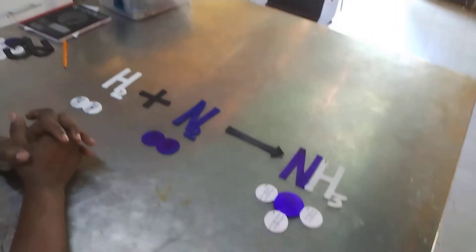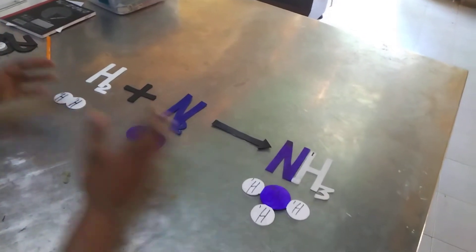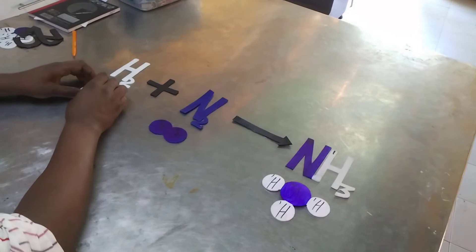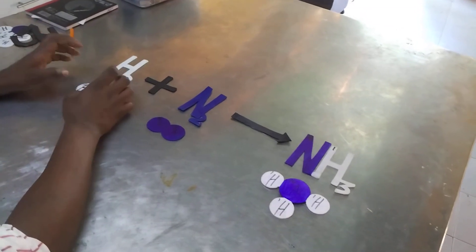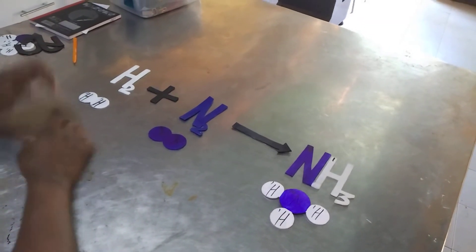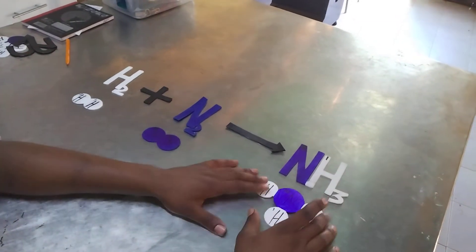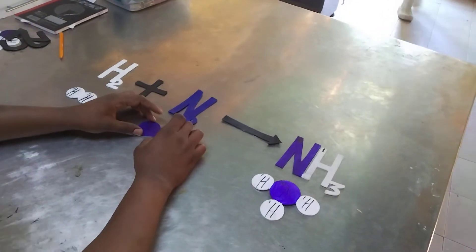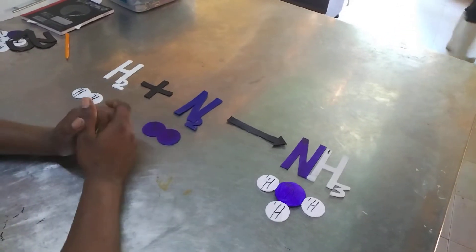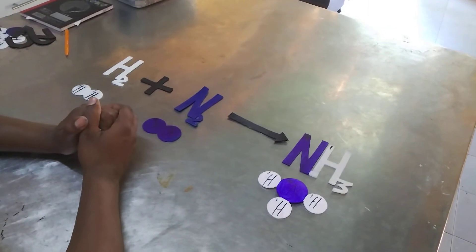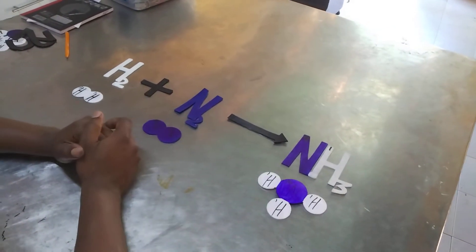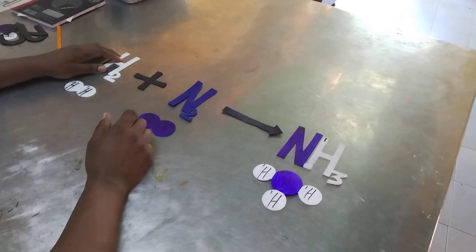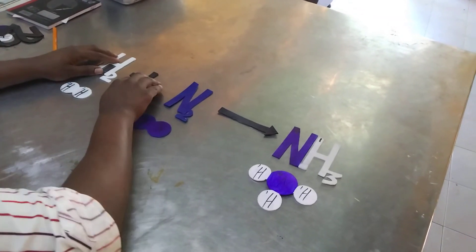Now we can clearly see individual atoms on both sides of this equation. You can see that we have two hydrogen atoms on this side and three on this side. We have two atoms of nitrogen on this side and one on this side. Now we are going to start balancing the individual atoms.